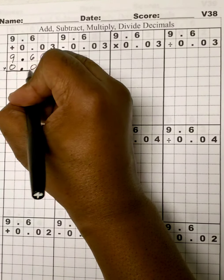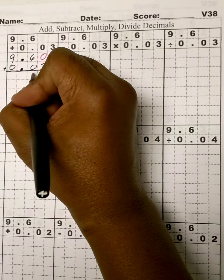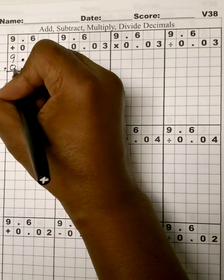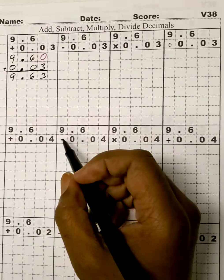Let's add. 3 and 0 is 3. 6 and 0 is 6. Our decimal, 9 and 0 is 9. We're done.